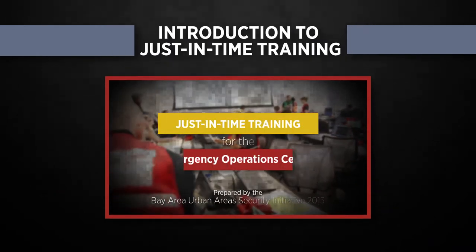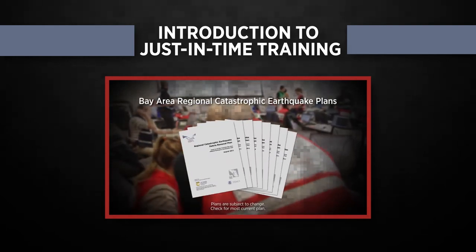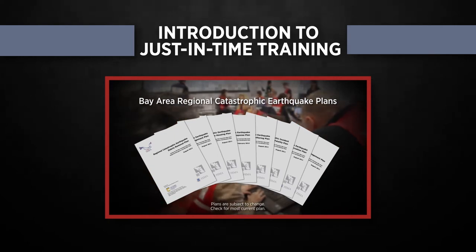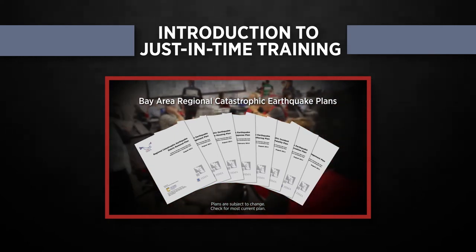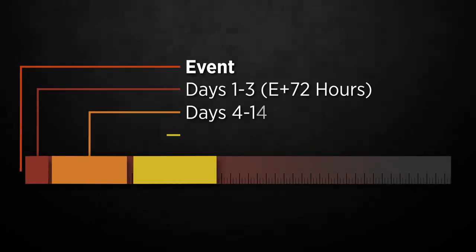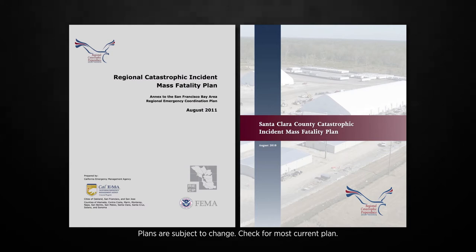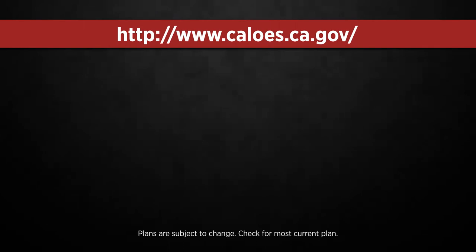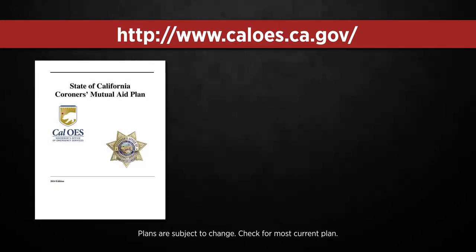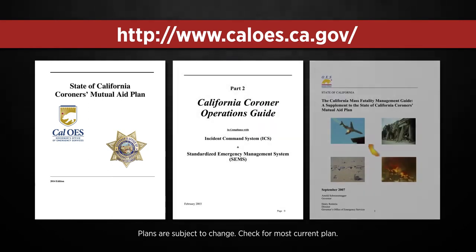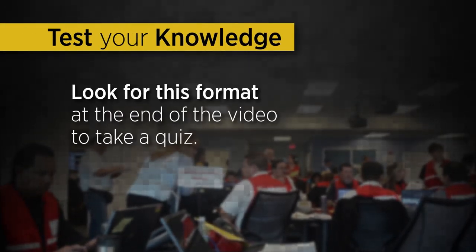This just-in-time training is one in a series based on the eight Bay Area catastrophic earthquake plans. The introductory video includes basic EOC responsibilities and an introduction to the standardized emergency management system, or SEMS. Whether you are in an EOC during the first, second, or third time period of the disaster response, it may be helpful to refer to the Bay Area Regional Catastrophic Incident Mass Fatality Plan, or your local government or operational area mass fatality plan as you watch this training. Specialized guidance is also available on the Cal-OES website. Additional resources are listed at the end of this training. Stick around to test your knowledge with a quiz at the end.